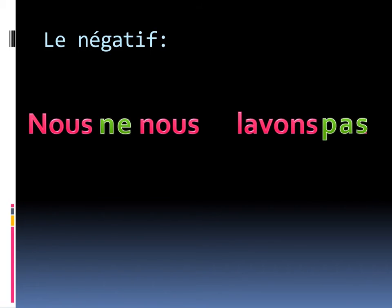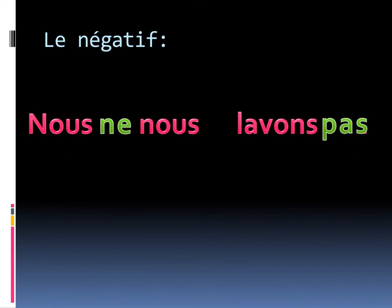Le négatif pour les verbes réfléchis, c'est amusant. So let's say we have nous nous lavons — we wash ourselves. It's a good thing, right, to be clean. But maybe we don't have time one morning. So we add in ne and pas. When we do a négatif for les verbes réfléchis, the pronom réfléchi and the verb stick together. Ne and pas sandwich the verb on the outside — kind of like having a hamburger with fromage inside your buns. It's pronounced nous ne nous lavons pas — we are not washing ourselves.